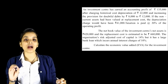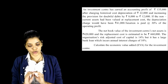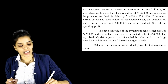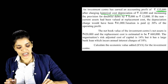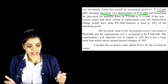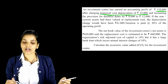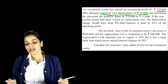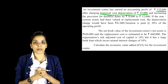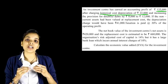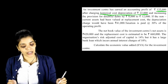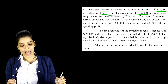An investment center has earned an accounting profit of 1,35,000 rupees, after charging historical cost depreciation of rupees 22,000. Accounting profit is 1,35,000 and historical cost depreciation charged is 22,000. So we will add back the historical cost depreciation. And increasing the provision for doubtful debt by 8,000 to 12,000. So this is overprudence — increasing provisions — so we will also add back the increase in provisions to profit. If the non-current assets had been valued at replacement cost, the depreciation charge would have been 41,000.